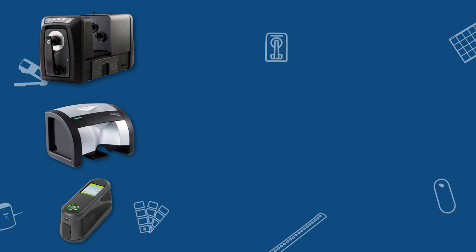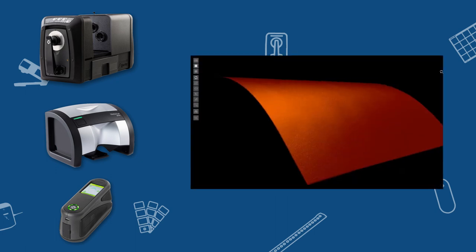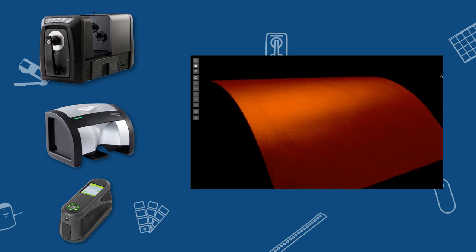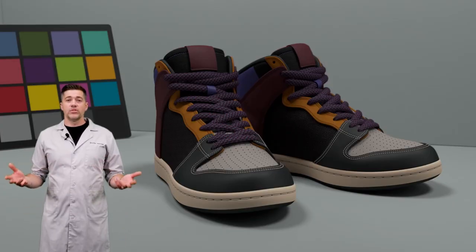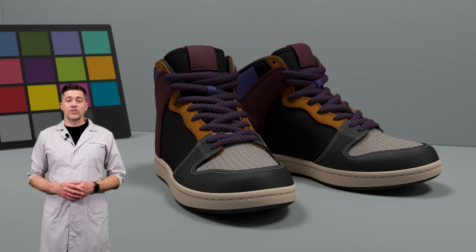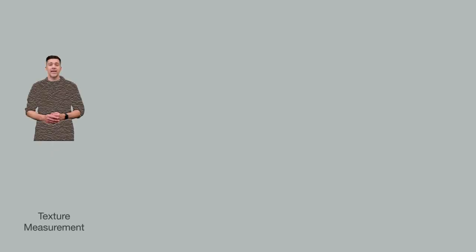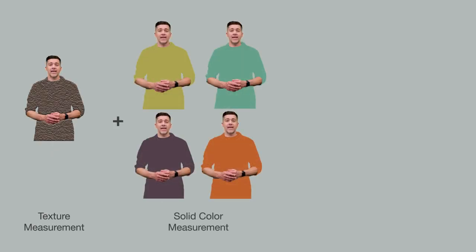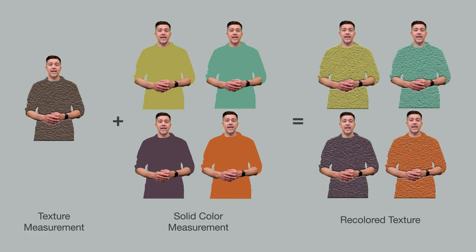Finally, a multi-angle spectrophotometer is the preferred tool for measuring metallic samples and special effect finishes. It can also be used to capture surface texture. Once physical materials have been captured, digital material libraries can be created. The material attributes measured can be edited in X-Rite's Pantora to create 3D representations of the object you're measuring.